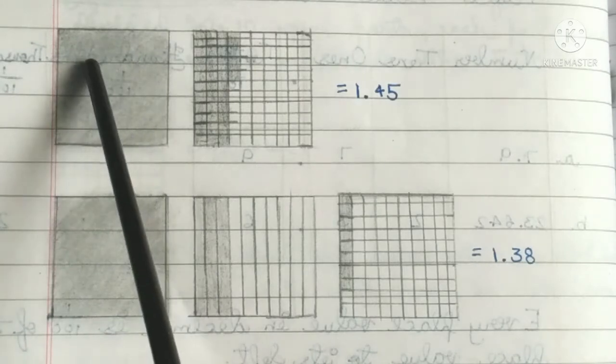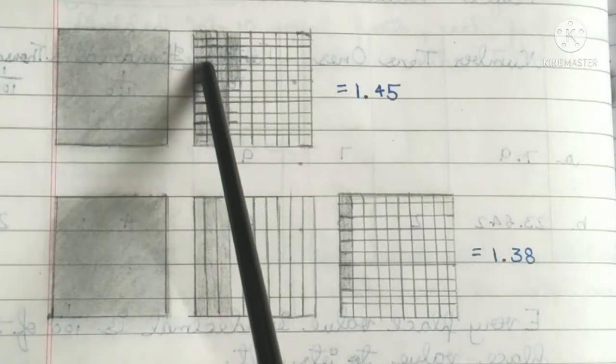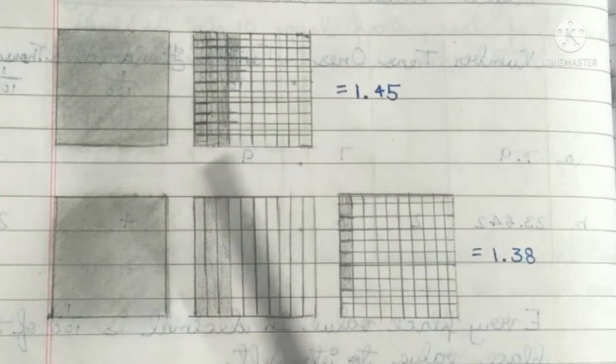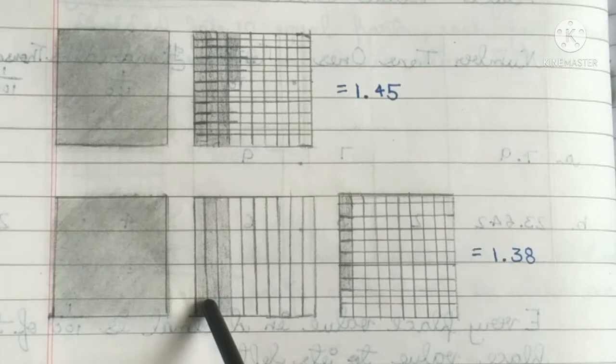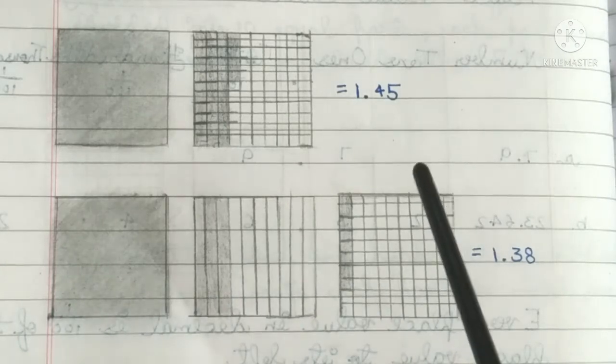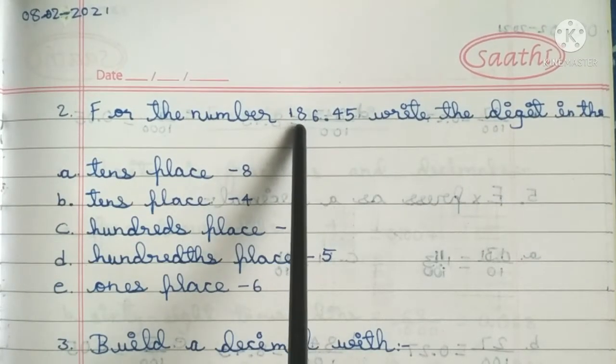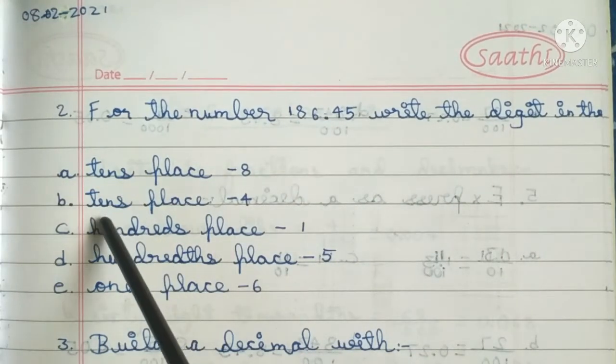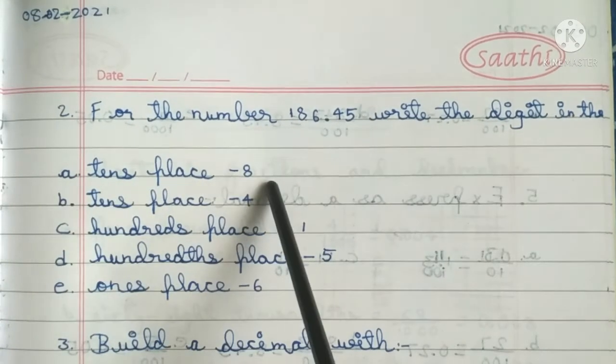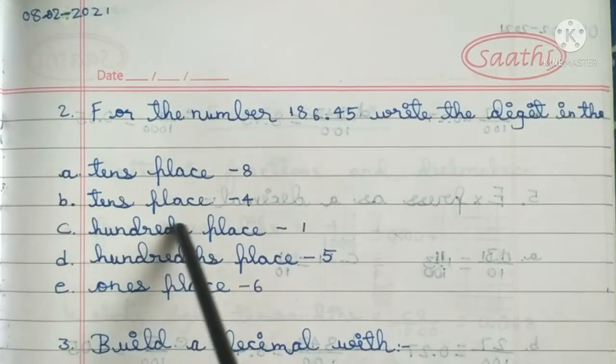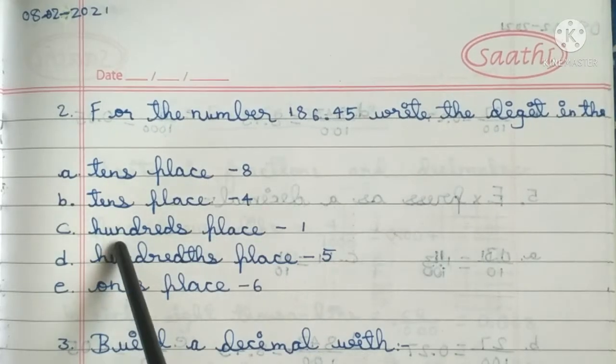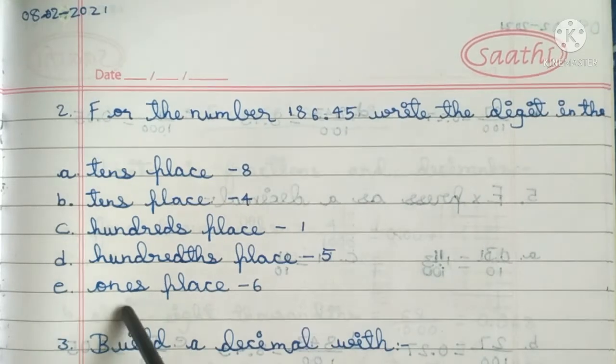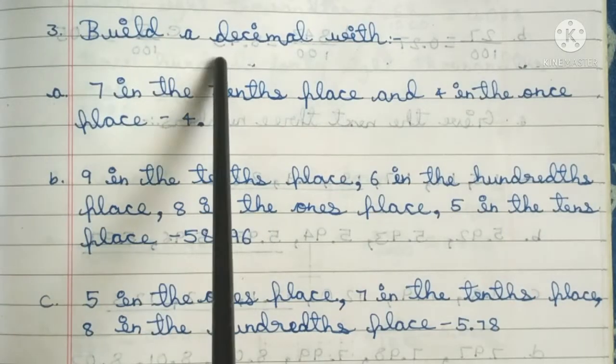Third one, 1.12343.5. Fourth one, 1.38. Second main, for the number 186.45, write the digit in the tens place: 8. Tens place: 4. Hundreds place: 1. Hundredths place: 5. Ones place: 6. Third main, build a decimal with...